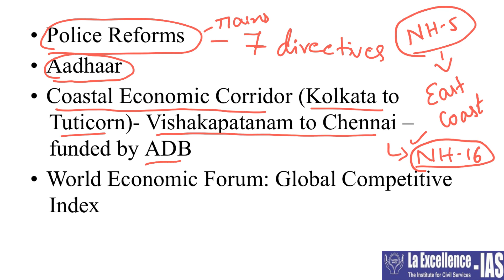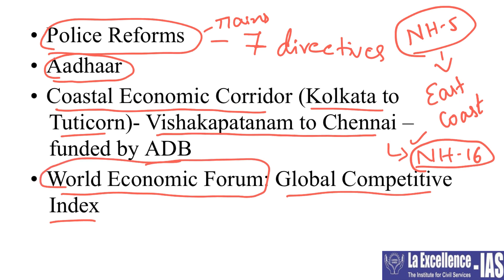From prelims point of view, another important topic is the Global Competitive Index, which is actually given by the World Economic Forum. For the last three or four years, UPSC has been focusing on this type of information — giving different reports and asking who actually released them. Please be careful: whenever they ask you about any particular index, they are not asking randomly. Rather than by-hearting all indices, look at certain important issues discussed in newspapers over time, and remember only those.